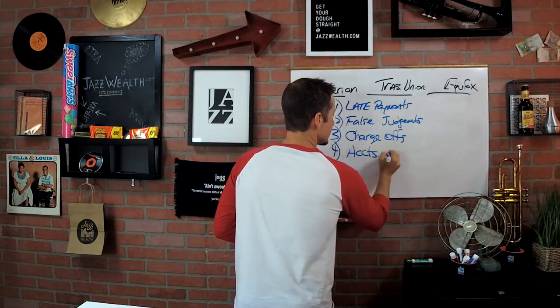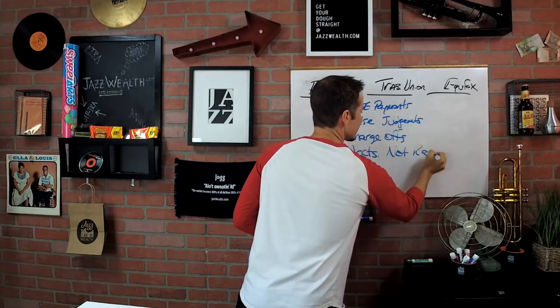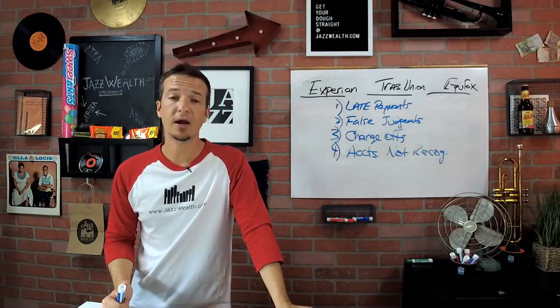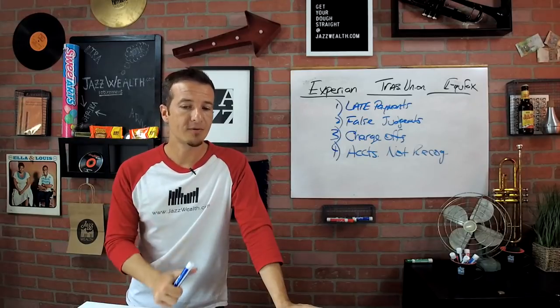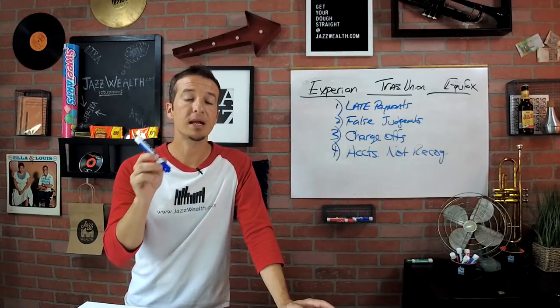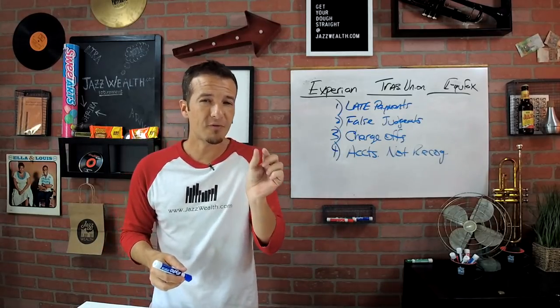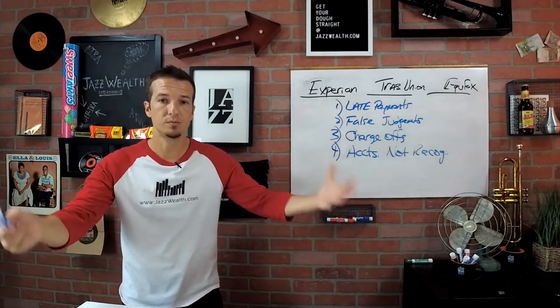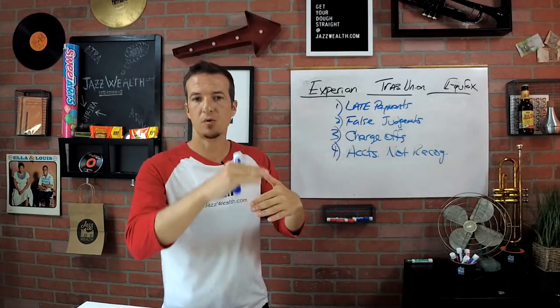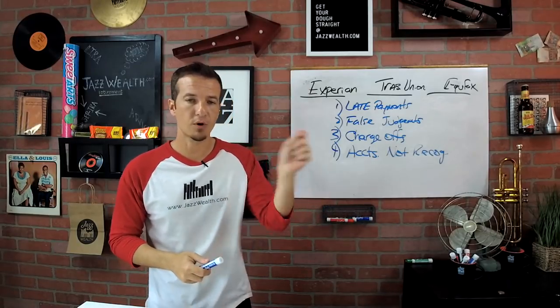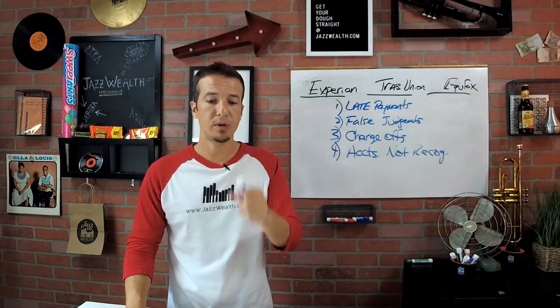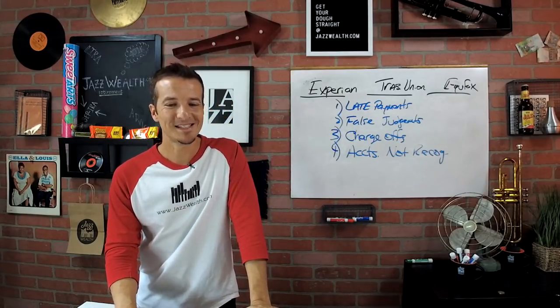Number four, accounts you don't recognize. That's a very common one. It's an easy one to fix, no problem at all. Number five, addresses that are not yours. It could be that the old addresses were messed up. It could be a whole number of different things, but if you see an address on there that's not yours, that might be the first hint that somebody is trying to use your credit to buy something or open up a line of credit. And number six is old names that you've never used, especially if you've been married once or twice or three times.